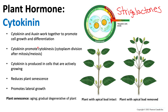In summary, cytokinin promotes growth and differentiation, works alongside auxin, reduces plant senescence, and promotes lateral growth by working in the opposite direction to strigolactones.